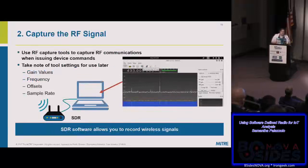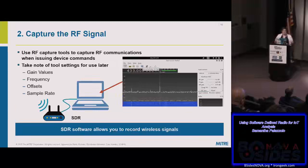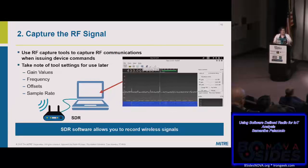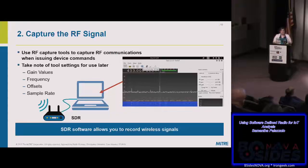The first step is to capture the signal. There are a lot of different tools, and most of the software I mentioned has some capturing capability. When you capture something, you really want to keep track of the settings you use — things like what frequency you captured on, what the offset is, and the sample rate (how many samples per second the hardware is taking in). These things are important to keep track of and will help you later in the analysis.